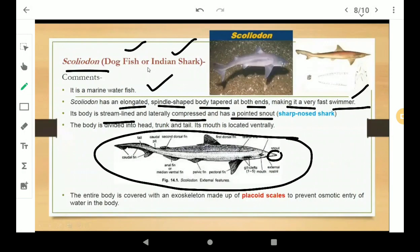The body is divided into head, trunk and tail. Its mouth is located ventrally.